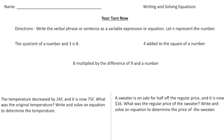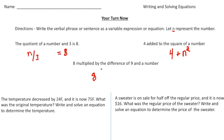Welcome back. Let's go over the practice problems. Directions say: write the verbal phrase or sentence as a variable expression or equation; let n represent the number. 'The quotient of a number and three is eight' — this is a verbal sentence because it has 'is,' so n ÷ 3 = 8. 'Four added to the square of a number' — this is a verbal phrase, so it's n² + 4. 'Eight multiplied by the difference of nine and a number' — using the distributive property: 8(9 − n).